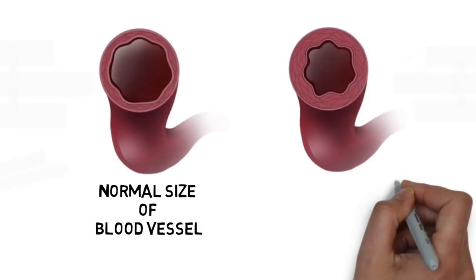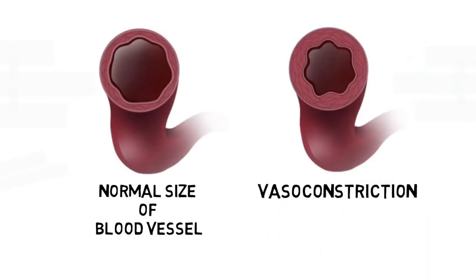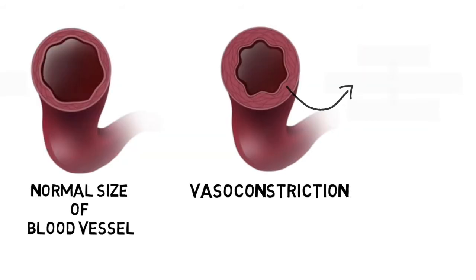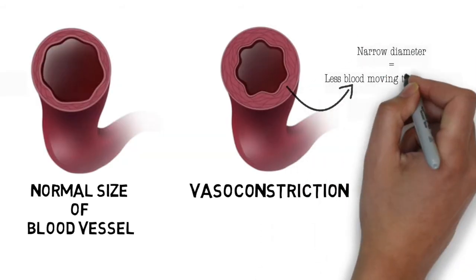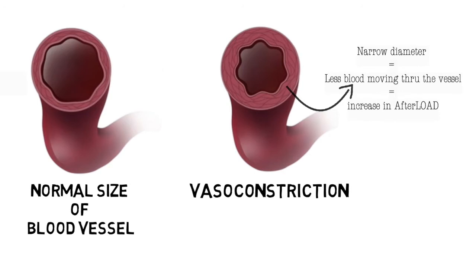If the aorta becomes vasoconstricted and the diameter of the vessel decreases, that's going to make the heart's job harder — it's going to have to pump much harder and create a lot more pressure to push the blood out. That's what happens with atherosclerosis: it narrows down the diameter of the vessels and the heart needs to work harder to push the blood out.